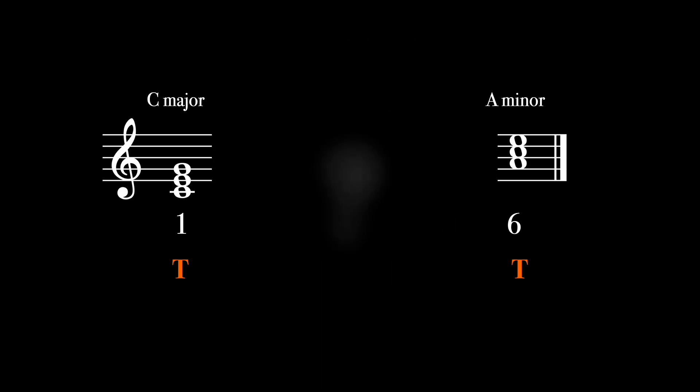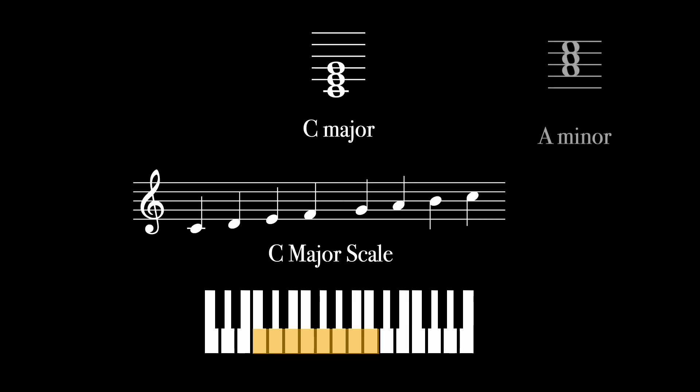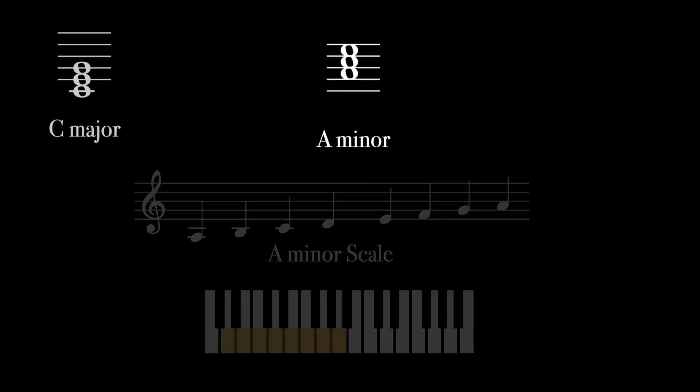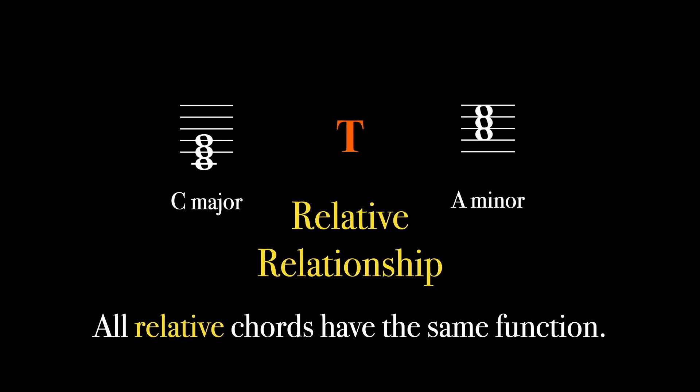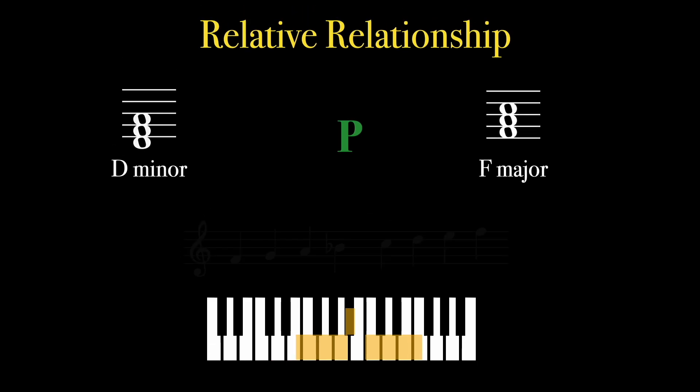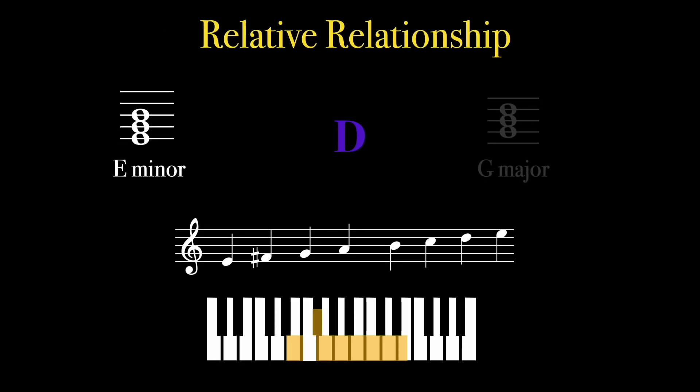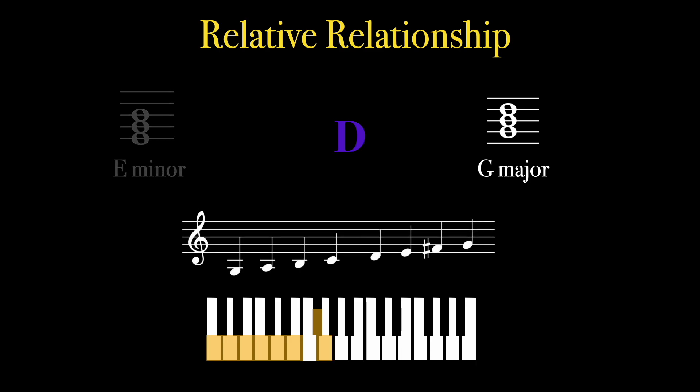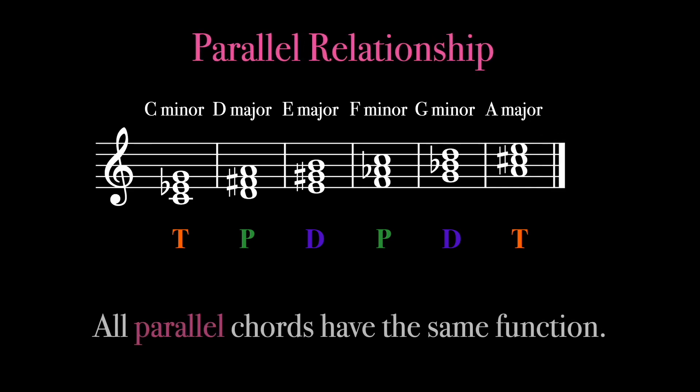Let's take a closer look now. Why do one and six share the same function? If we build the scales on both one and six, we will find one is a major scale and six is a minor scale. These are the two most useful orders of the scale. This commonality between one and six is called a relative relationship. All relative chords share the same function. This relative relationship holds true for two and four and three and five. Additionally, you can change chords from major to minor. This is called a parallel relationship. All parallel chords share the same function.